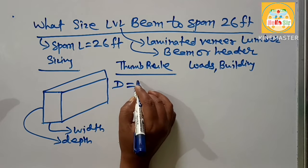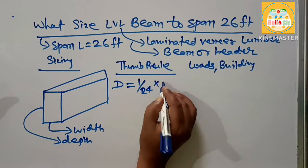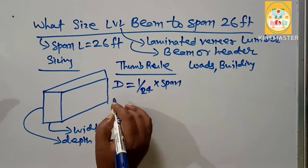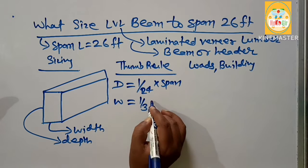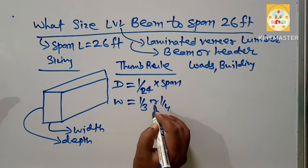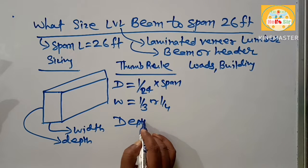The depth of the LVL is 1/24th of the span in inches, and the width of the LVL beam is 1/3rd or 1/4th of the depth of the LVL beam. That's why the depth of the LVL beam equals...